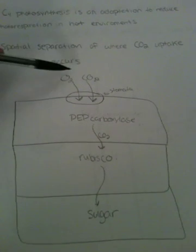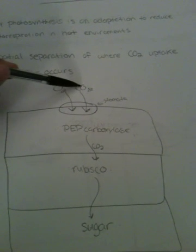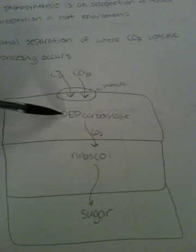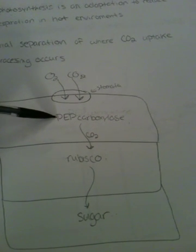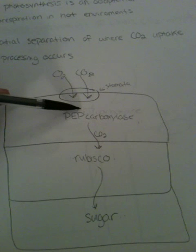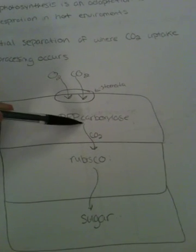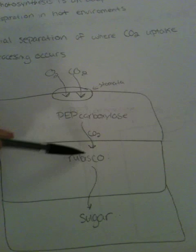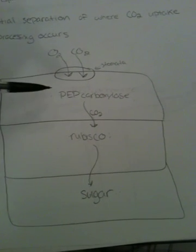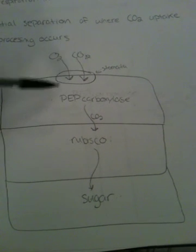Here in my diagram, I try to explain it. O2 and CO2 come in through the stomata to the first part of the plant where PEP carboxylase is present. PEP carboxylase can only bind to CO2 and it transports it to the second part of the plant where rubisco is present, leaving O2 in the first part of the plant.